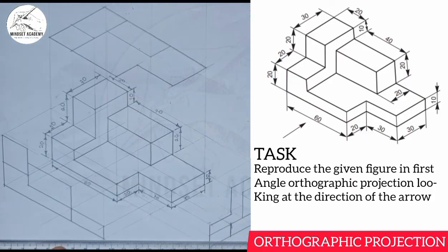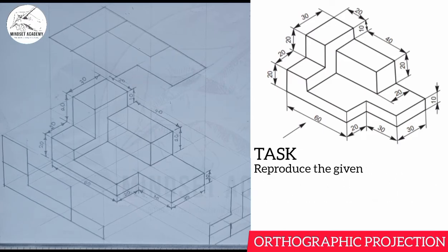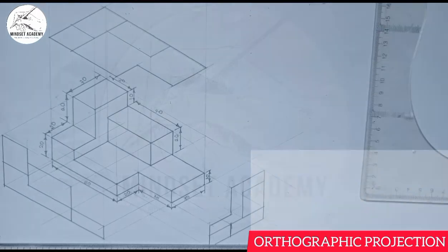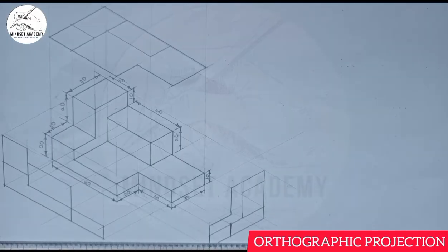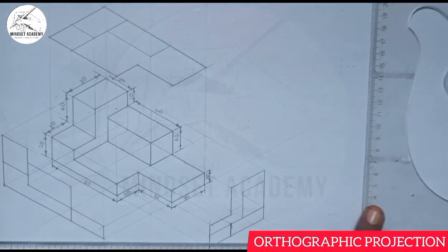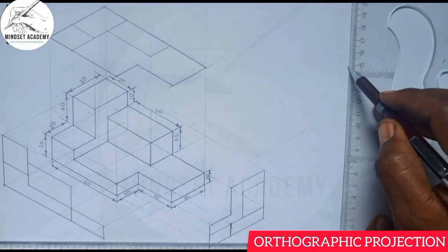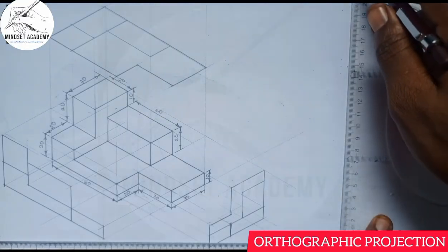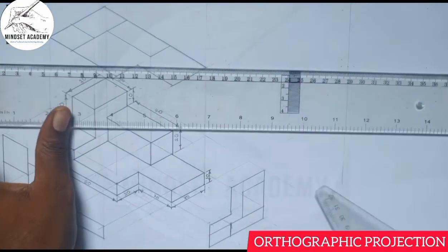We are told to draw in first angle projection. The first thing you do when you hear the word orthographic projection is to draw your quadrant — your Y and your X axis. You draw your Y axis this way and your X axis this way.